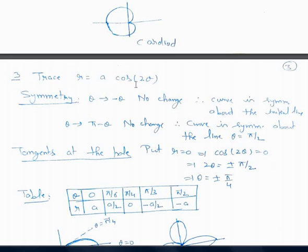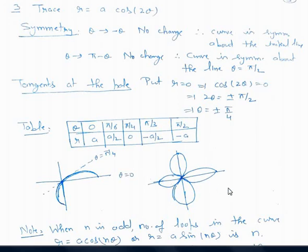Third example: trace the curve R equals A·cos 2theta. To check symmetry, replacing theta by minus theta gives no change, so the curve is symmetrical about the initial line. Also, replacing theta by pi minus theta gives cos(2pi - 2theta) = cos 2theta, so no change — meaning the curve is also symmetrical about the line theta equals pi/2. Since both symmetries hold, we take values of theta from 0 to pi/2 when forming the table.